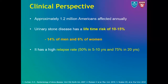Let's begin with the clinical perspective. Urolithiasis is a universal problem affecting patients both in the developed and the developing countries. Approximately 1.2 million Americans are affected annually by stone disease and it is estimated that up to 14% of men and 6% of women will develop stone disease during their lifetime. Stone disease has a high relapse rate and in up to 50% of patients, they can recur in the first 5 to 10 years and in 75% within 20 years.